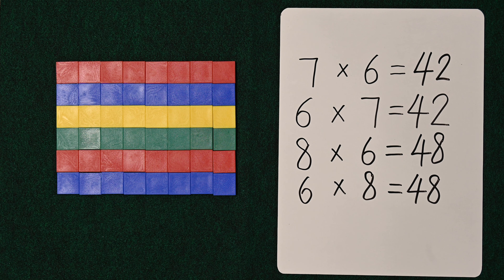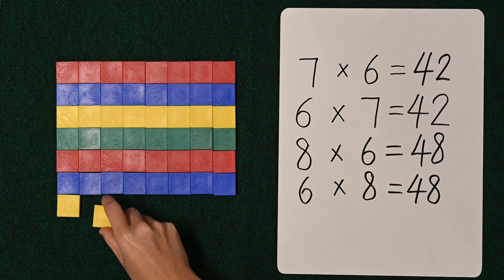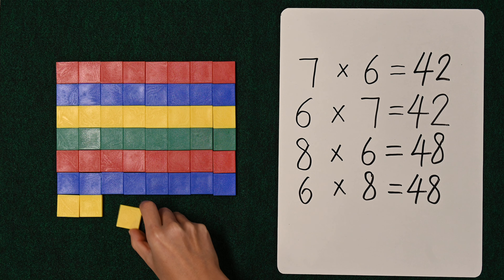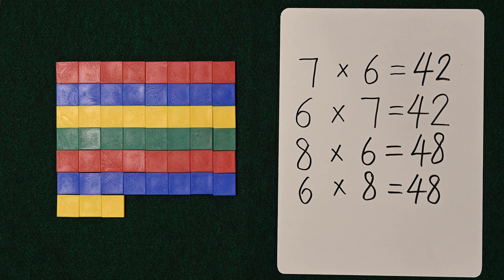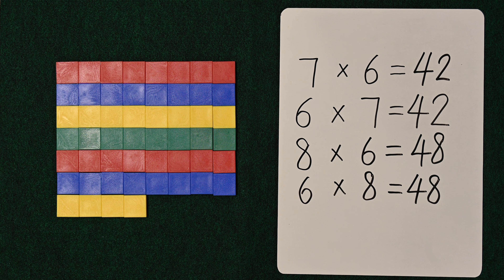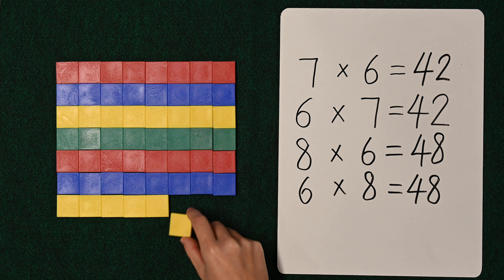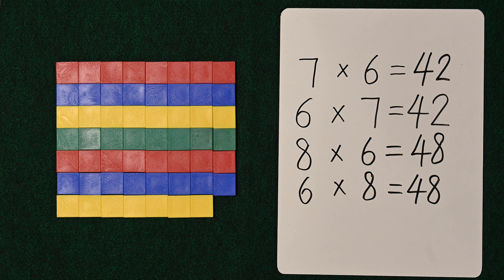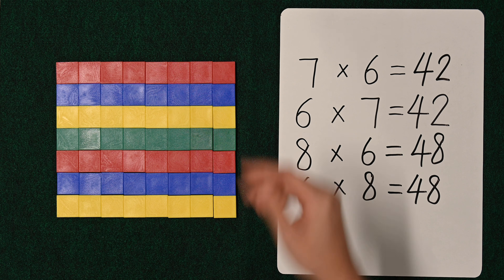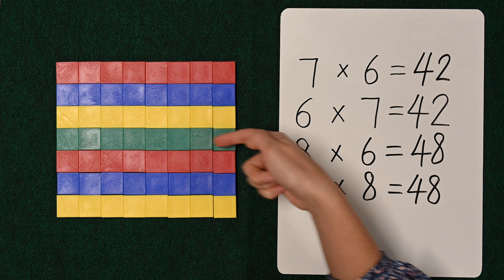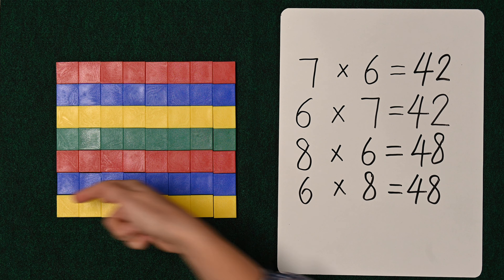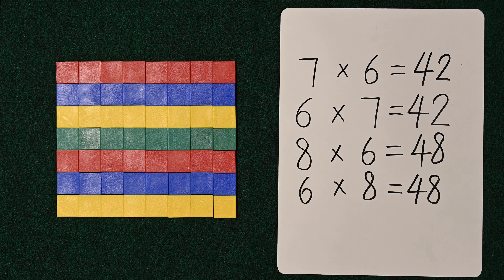I've got one more to show you today. We're going to add one more row to the bottom of our rectangle. This will give us eight columns like we have already and seven rows. It's going to be eight by seven, or eight times seven. We can count by eights: eight, sixteen, twenty-four, thirty-two, forty, forty-eight, fifty-six.